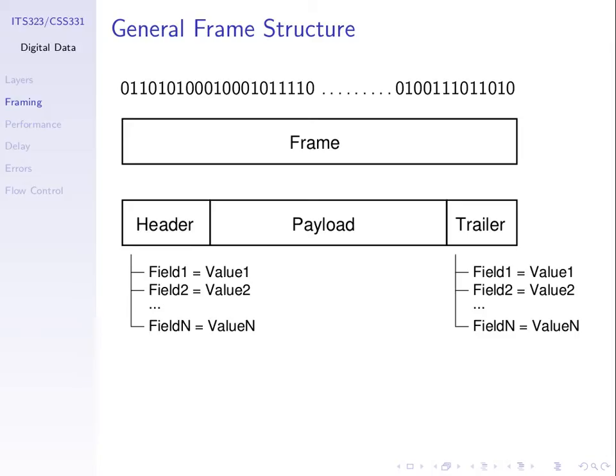Some of the other information a frame may contain includes the address of who's sending, who's supposed to receive, and maybe a sequence number to count the frames, so that if we send a thousand frames, the receiver can check that it's received the correct thousand frames in order. That extra information is contained inside either the header or the trailer, or both.